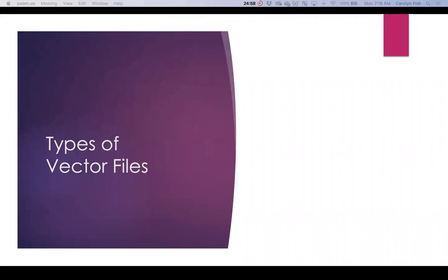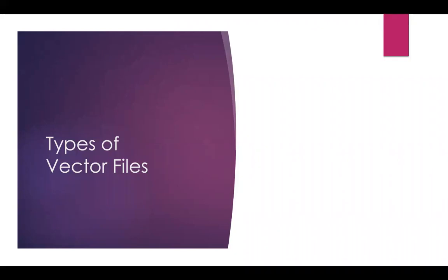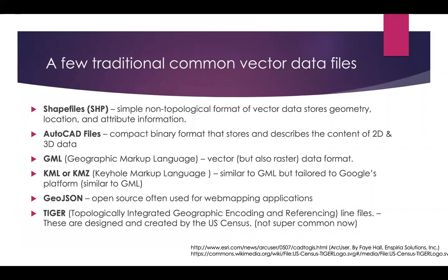Let's have a quick chat about the types of files you see for vector data. The most common GIS vector data file you will see is the shapefile. This type of data is non-topological, but it does a fine job at storing geometry — points, lines, and polygons — as well as location and attribute information.